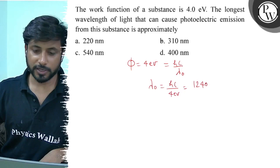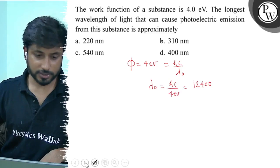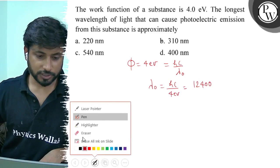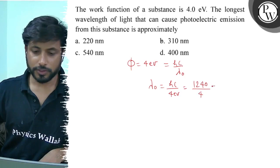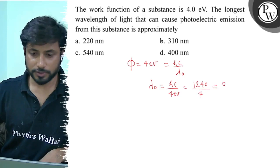The value of hc is 1240. So 1240 divided by 4, this will come to 310 nanometer.